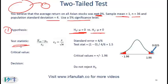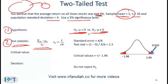Once you set up your hypothesis, the second step is the test statistic. The formula is: x-bar — the sample mean — minus mu-naught, divided by the standard error. Mu-naught is the hypothesized value, which is 0 in our example. The standard error is s over root-n, or sigma over root-n, depending on what you have.